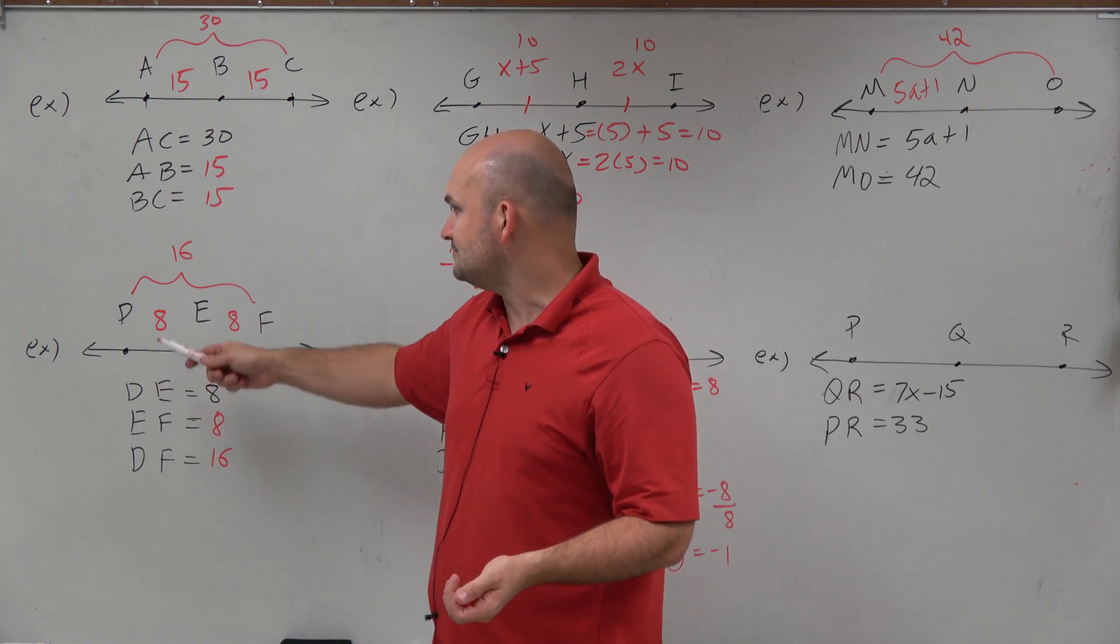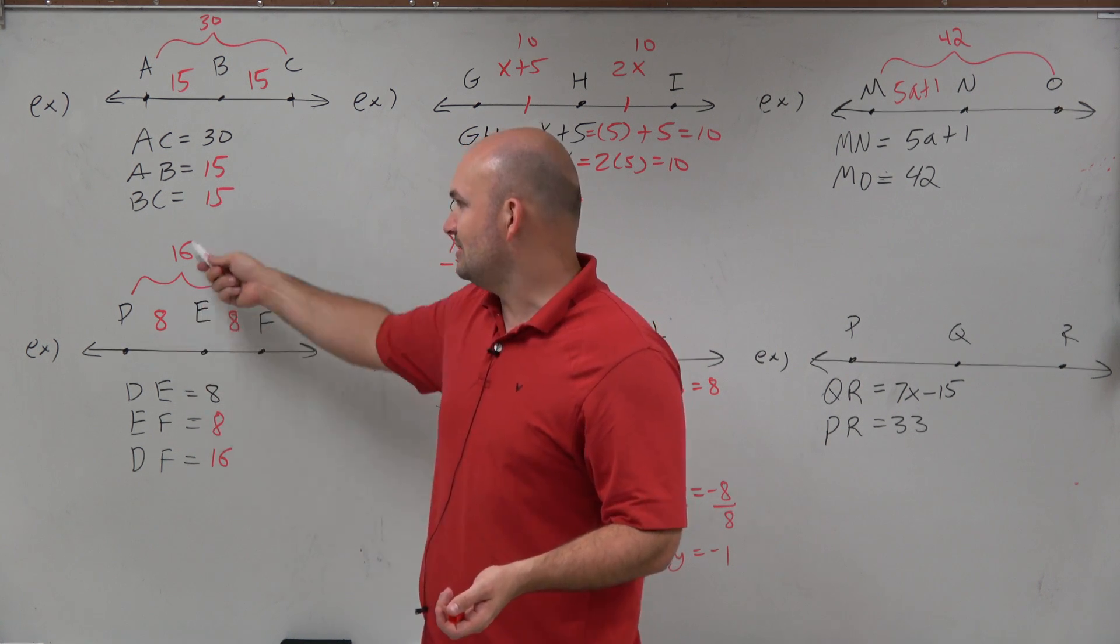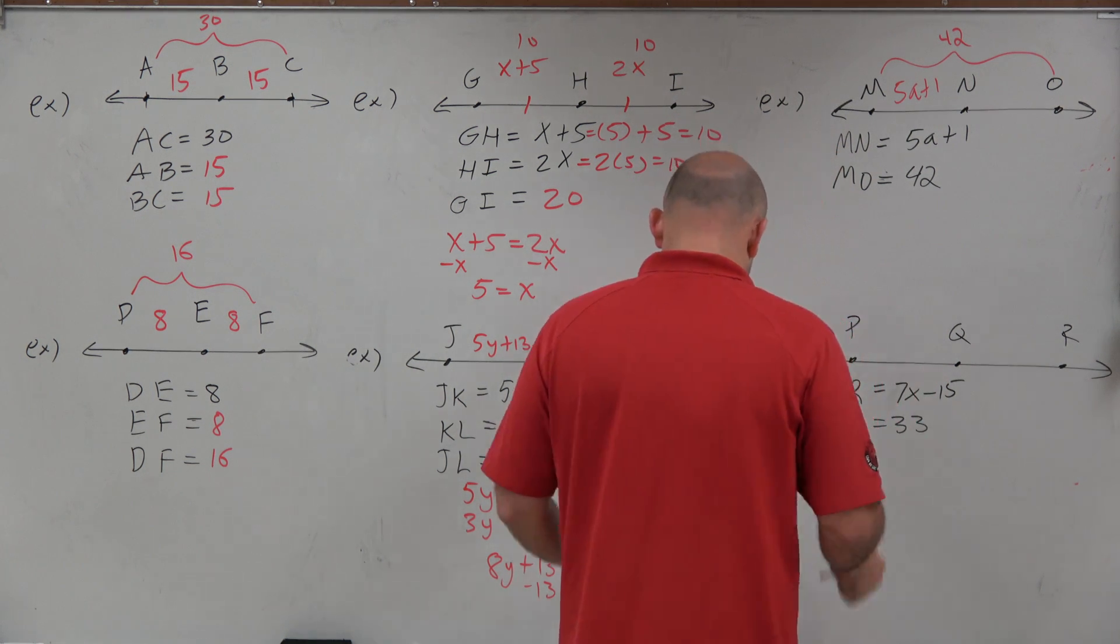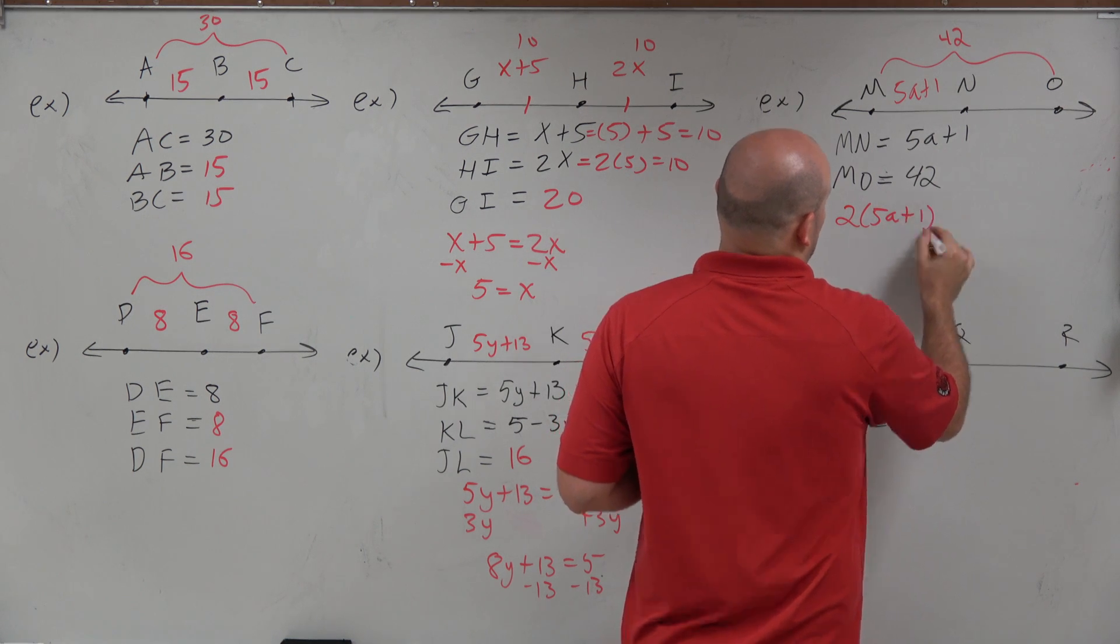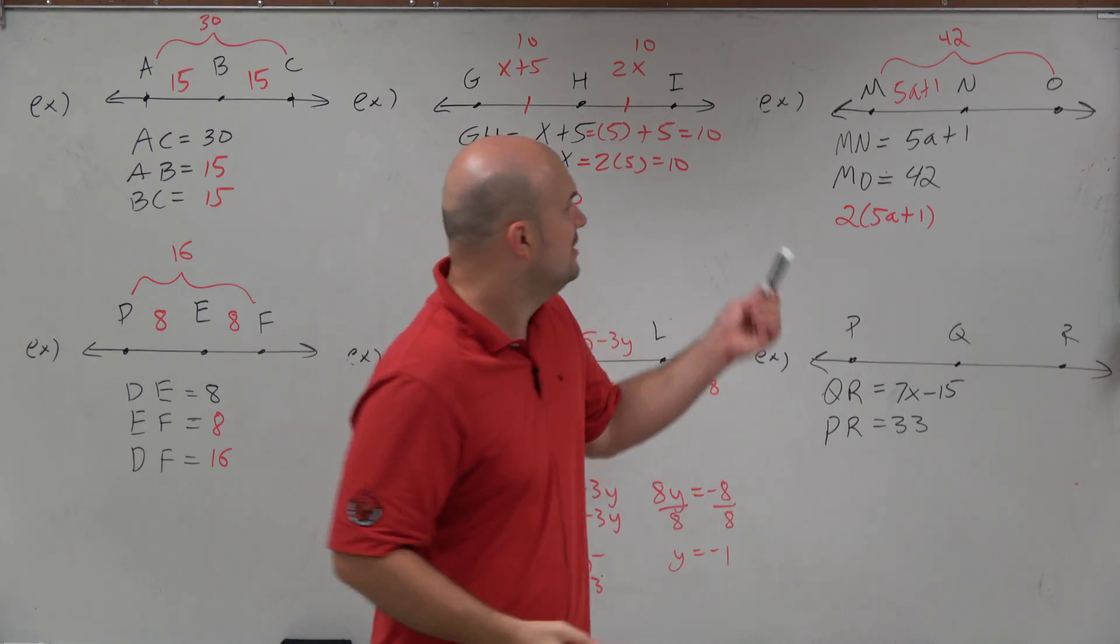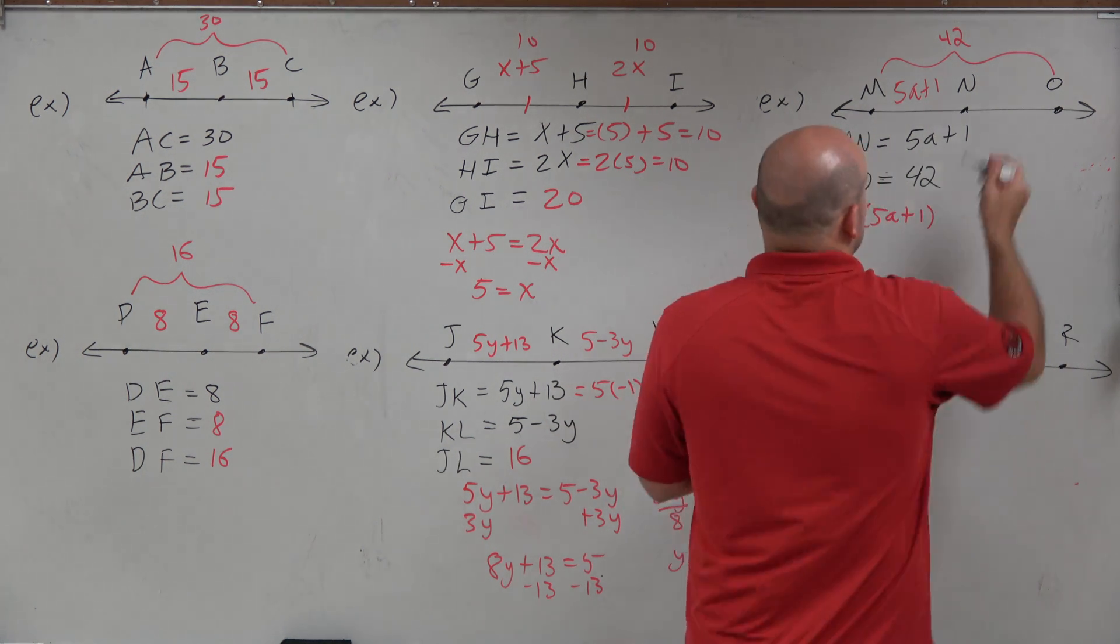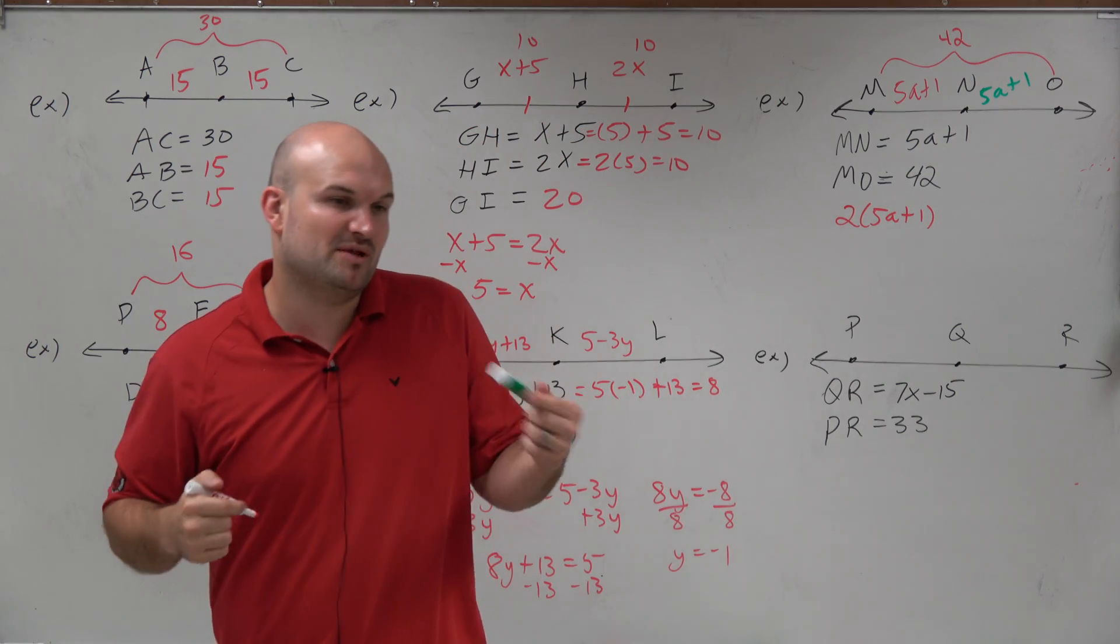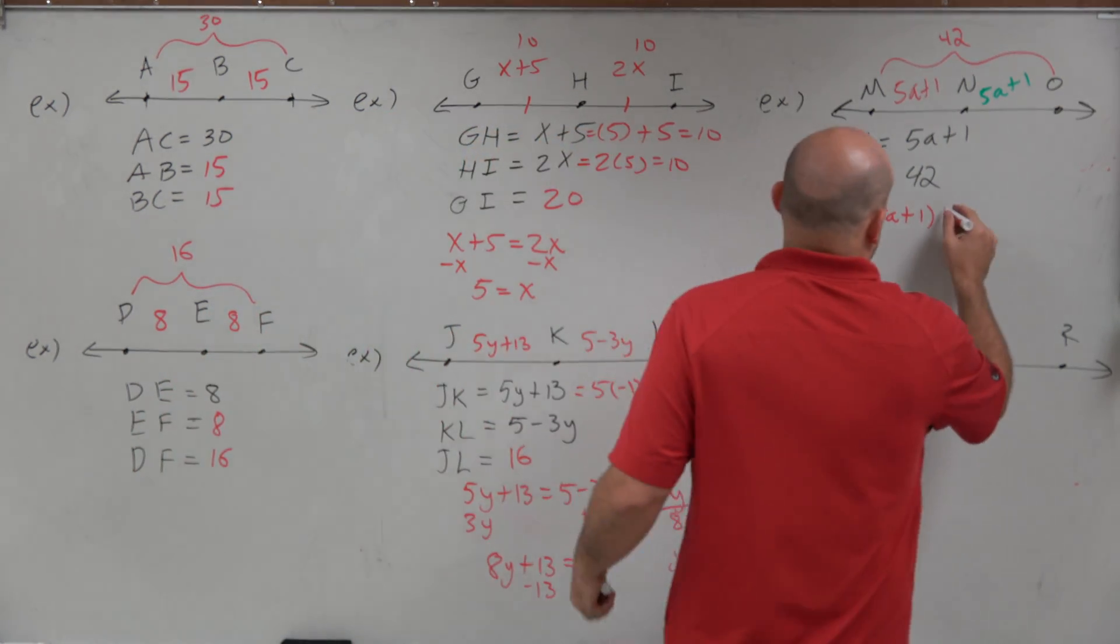So here, we were only given a length. We were actually only given one of those lengths. And what we did is we doubled it to get 16. So in reality, all I really have here is 2 times 5a plus 1. That's doubling it, multiplying by 2. Because really, if you have 5a plus 1 here, that means this would have to be 5a plus 1 as well. So instead of doing 5a plus 1 plus 5a plus 1 equals 42, you could just multiply by them two equals 42.